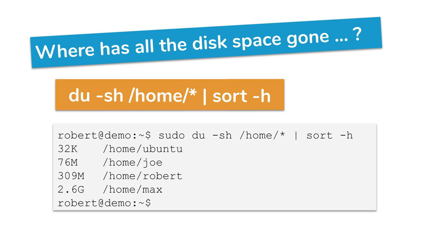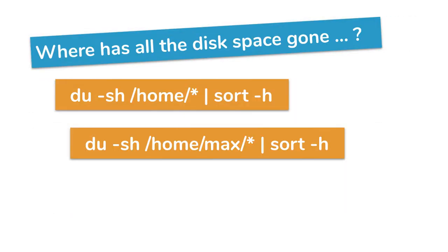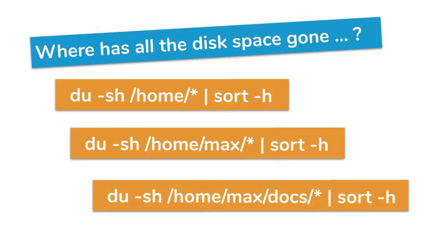If the sorted output shows that, for example, the directory `/home/max` contains the vast majority of occupied disk space, simply modify the command to drill down: `du -sh /home/max/*` piped through `sort -h`. By using `du` this way, you can always build up a picture step by step of where all the disk space has gone.